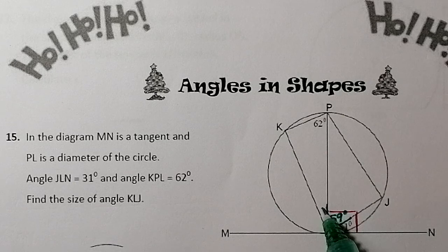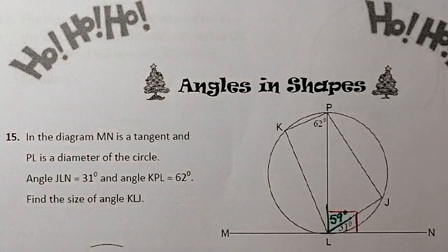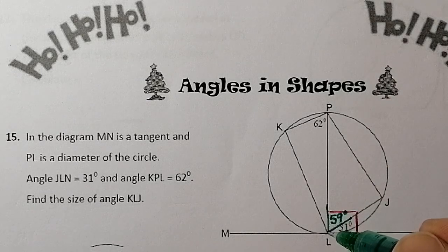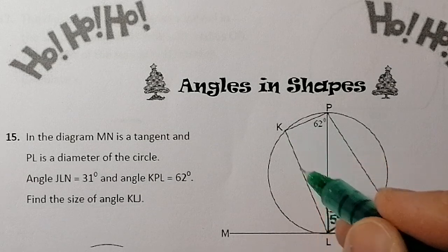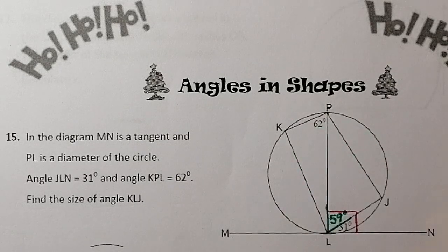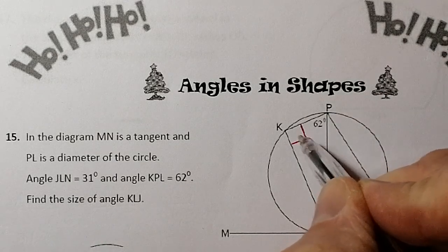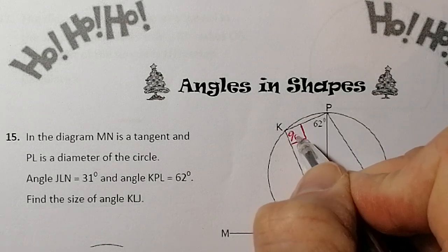Now I need to find this angle here — KLP — to allow me to get the full angle I've been asked for. I'm going to use the property of angles in a semicircle. If you have a line coming from either side of the diameter and touching the circle anywhere on that circle, it always meets at 90 degrees. So this angle here — PKL — is 90 degrees.